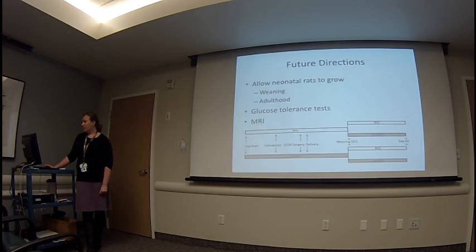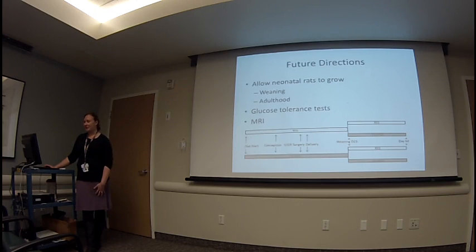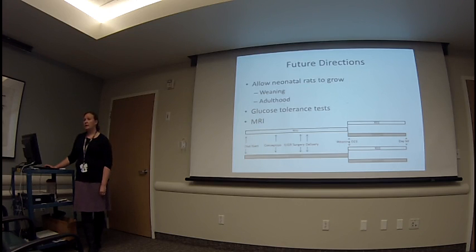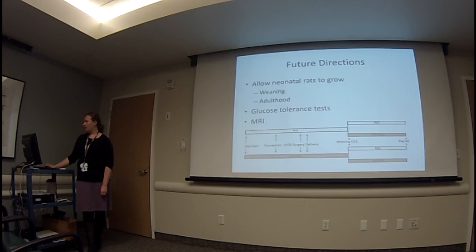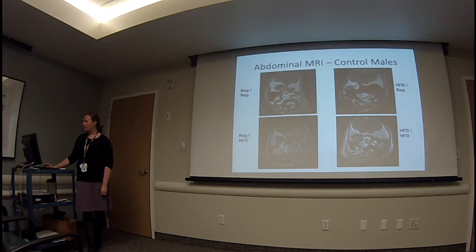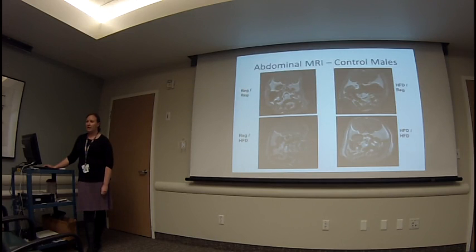For the rats that have been able to grow up, we're looking at glucose tolerance tests to get a sense for insulin resistance, as well as MRIs looking at visceral adiposity. Because this is a work in progress, I've included two quick slides about what we're actually looking at on MRI.